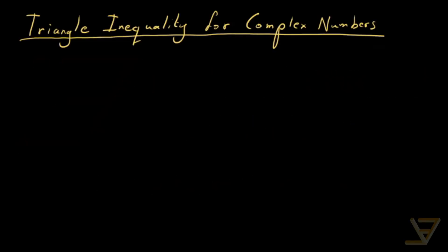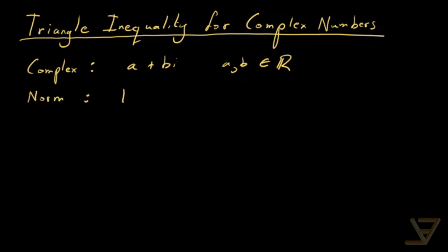Let's talk about the triangle inequality for complex numbers. As a reminder, complex numbers can be written in rectangular form like a + bi, where a and b are real numbers. The complex norm is defined as the absolute value of a + bi, which equals the square root of a² + b². That's essentially the distance of the complex number from the origin of the complex plane.